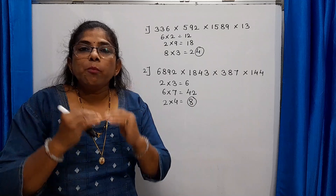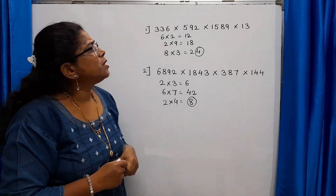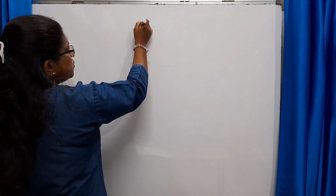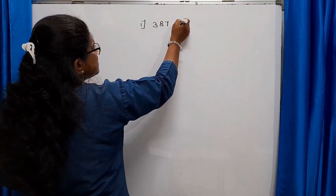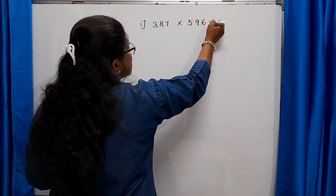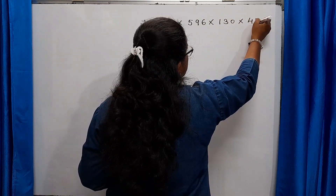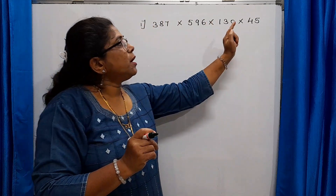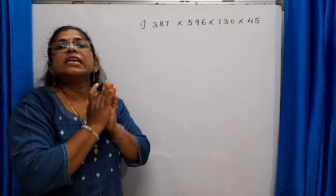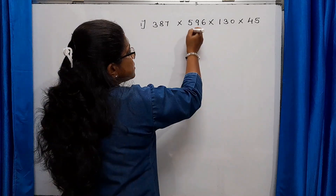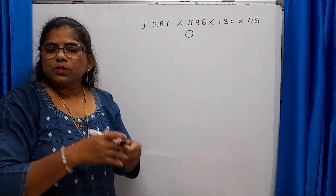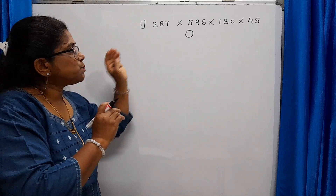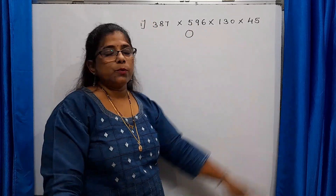Now let's see a few more important tips regarding this same concept. For example: 387 × 596 × 130 × 45. If you find any one number ending with 0, the units place of the final product is going to be 0. No need to even multiply — straightaway, if any one of the numbers has 0 in the units place, the final product's units place is also 0.